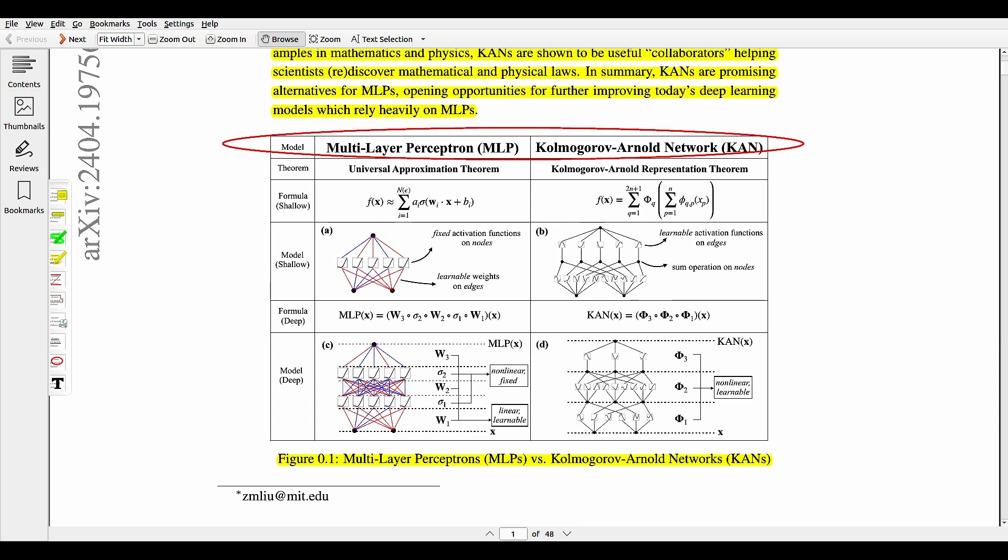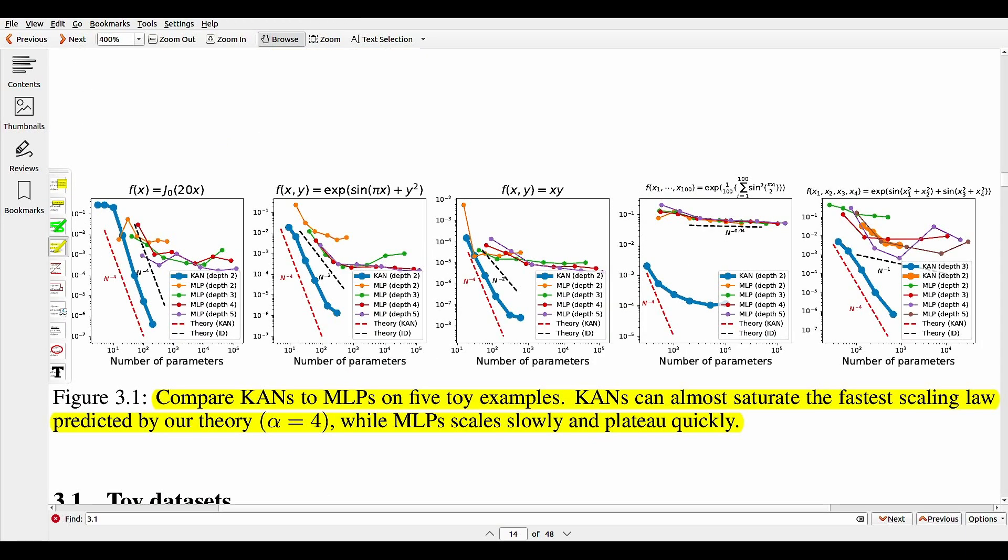These one-dimensional activation functions are parameterized as splines. From practical aspects, we find that CANs are more accurate and interpretable than MLPs, although we have to be honest that CANs are slower to train due to their learnable activation functions. And from neural scaling laws, CANs have much faster scaling than MLPs, which is mathematically grounded in the Kolmogorov-Arnold representation theorem.